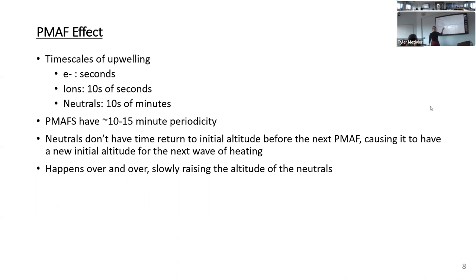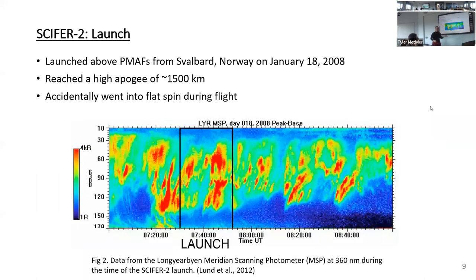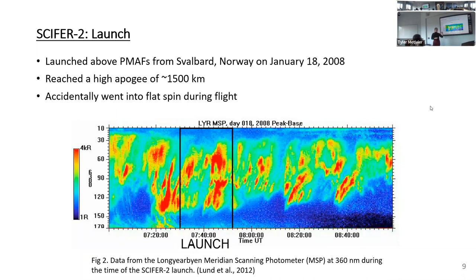The PMAP effect is pretty new — papers are currently being written and edited to introduce it. The main rocket I want to talk about today is the Cypher 2 rocket, which was launched above PMAPs from Svalbard, Norway on January 18, 2008. This figure shows data from the meridian scanning photometer in Longyearbyen, where we can see very distinct PMAPs coming through — the box indicating where we launched. We launched specifically over PMAPs. We reached an apogee extremely high for sounding rockets — 1500 kilometers — which doesn't happen often.